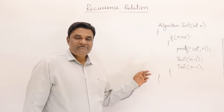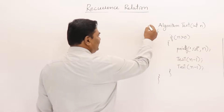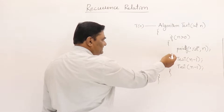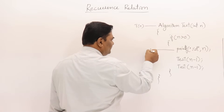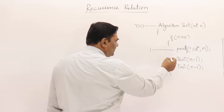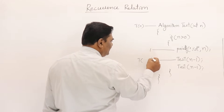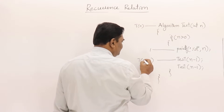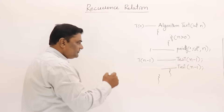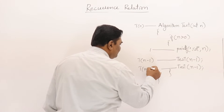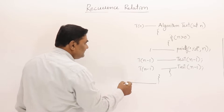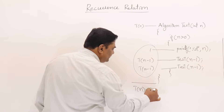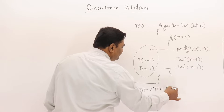Let us find out a recurrence relation for this function. If this is taking T(n) time, then inside there are three main statements. This first statement is taking one unit of time. Then this part takes T(n), since the test is taking n, so T(n−1) will be T(n−1). So T(n) equals 2T(n−1) plus 1.